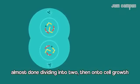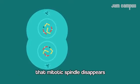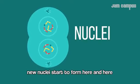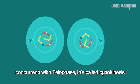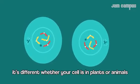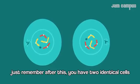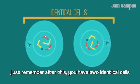Almost done dividing into two cells. The mitotic spindle disappears and nuclei start to form. When the cytoplasm splits, occurring with telophase, it's called cytokinesis. It's different whether your cell is plant or animal. Just remember, after this you have two identical cells.